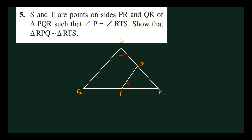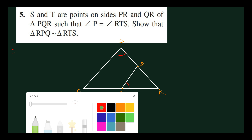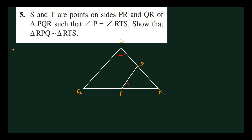One big triangle — the whole triangle PQR — you have to consider. In triangle RPQ and triangle RTS, what is given? Already given: angle P equals angle RTS.